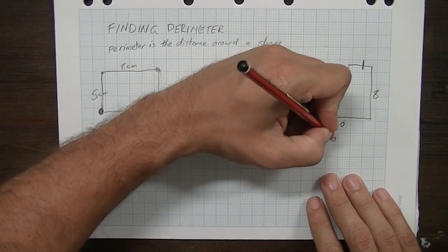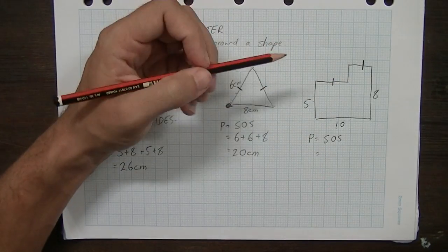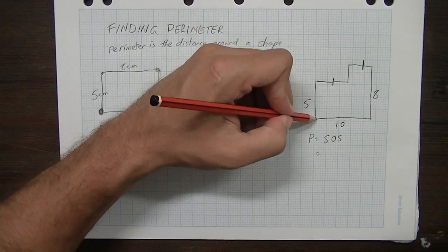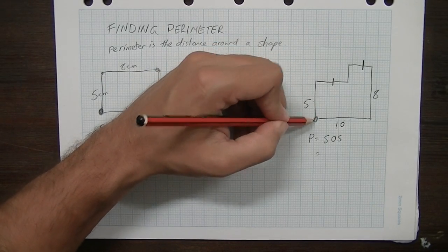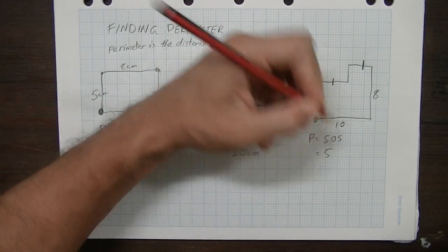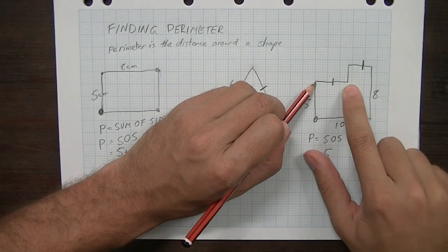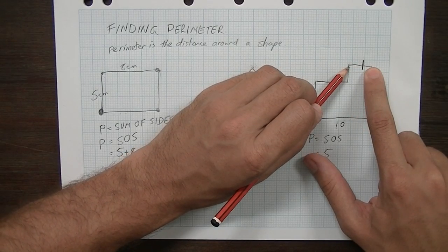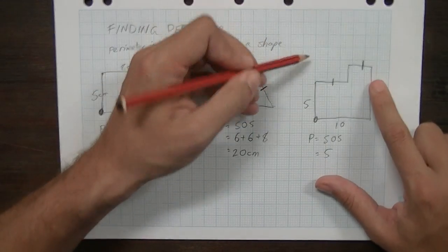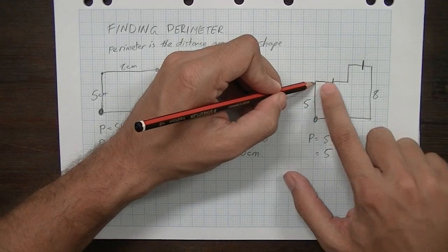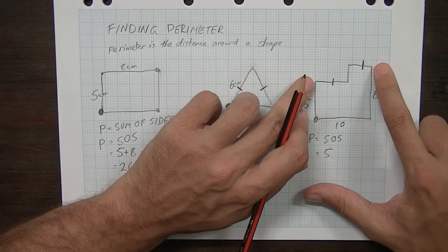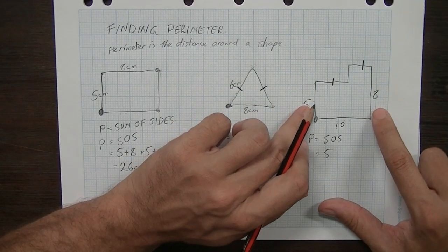Again, our rule's always the same, perimeter equals sum of sides. Now, let's take a look. Pretty straightforward so far, start from the left hand corner, move up, that's 5. Now, you can see, I haven't been told what that length is, but I do know that that length is the same as that length, and you should be able to see that this length plus this length, so from there to there, is going to be equal to there.